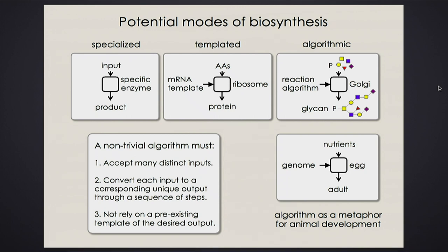Every protein is different, and even every individual protein molecule is different. Every time a protein goes through the Golgi apparatus, other parts of the protein cause it to see some subset of the enzymes in the Golgi. For every protein that goes through, it sees a different subset of enzymes. Bacteria don't have intracellular organelles — bacteria build their sugars on the outer membrane and make random heteropolymers with very little information content.